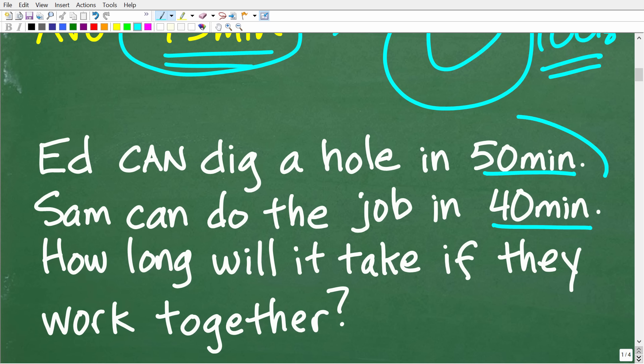So, if they work together, maybe we need to average these times, right? So, maybe we need to find the average of 50 and 40, which, of course, would be 45.